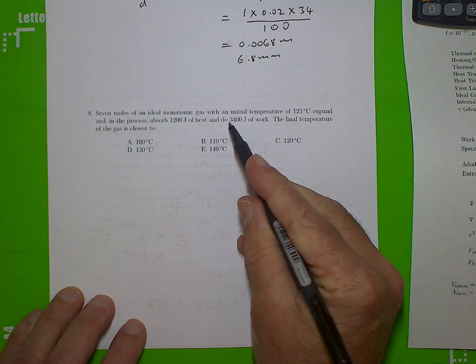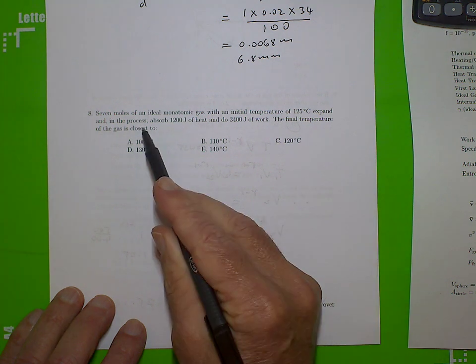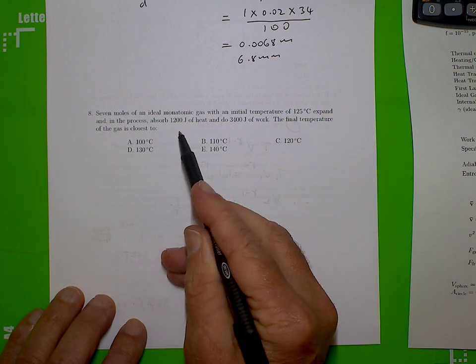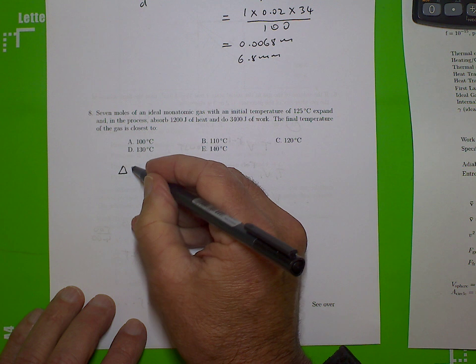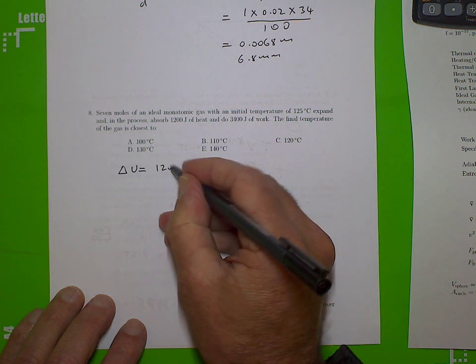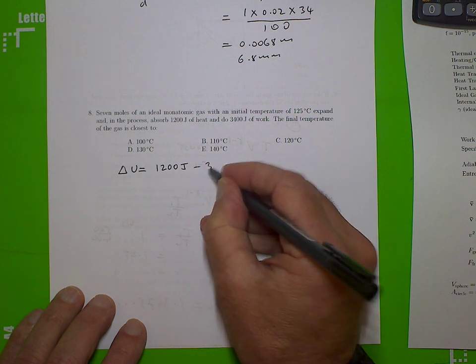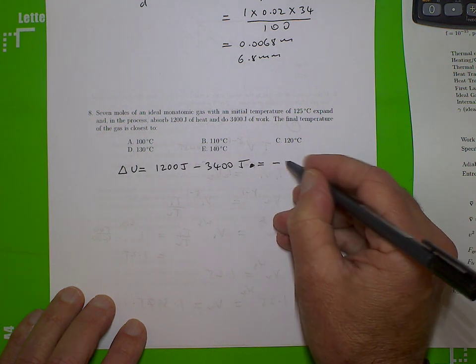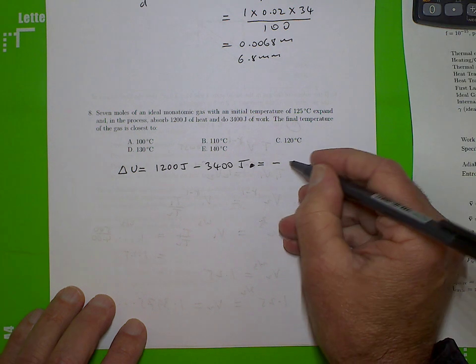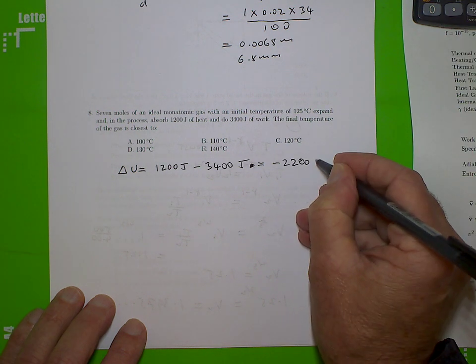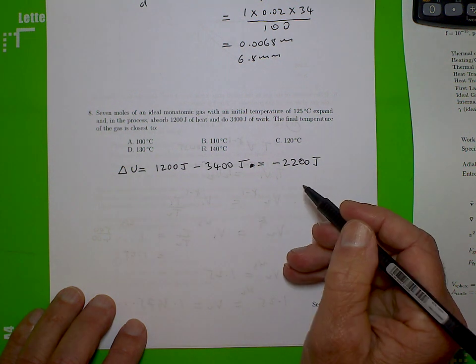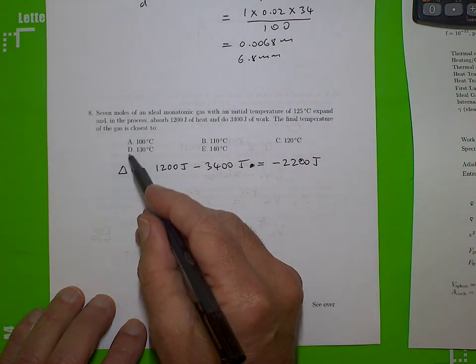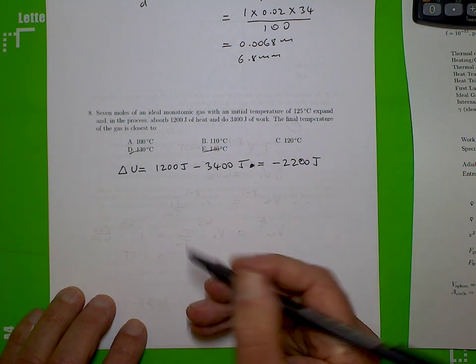Seven moles of an ideal monatomic gas with initial temperature of 125 degrees expand, and in the process, absorb 1200 joules of heat, and do 3400 joules of work, the final temperature of the gas is closest to. Well, basically, we have our change of internal energy is going to be 1200 joules of heat that are absorbed, take away the 3400 joules of work done. So that is minus 2200 joules. So our gas loses 2200 joules of internal energy. So it's going to be colder than it was before. So it started at 125, well, it can't be 130, and it can't be 140, it's got to be one of these cooler temperatures.